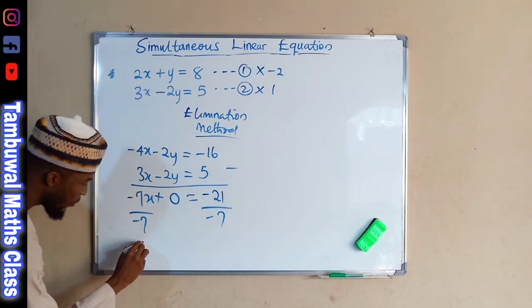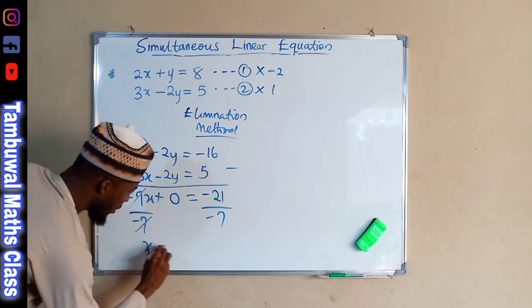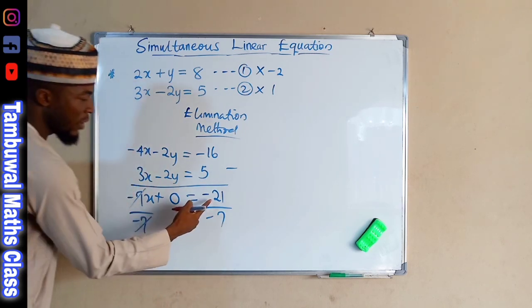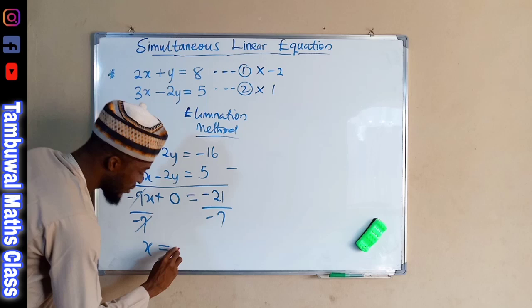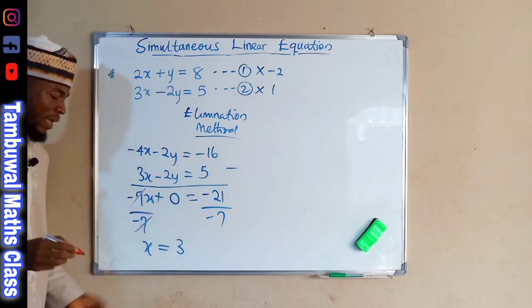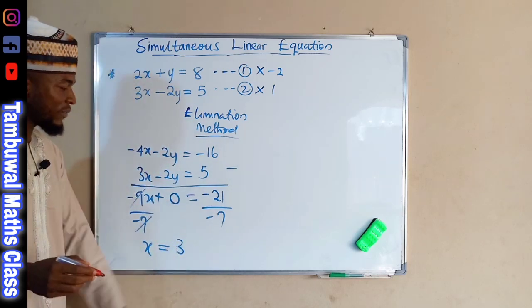Hence, we have X here, because this cancels this, which is equal to this divided by, this is positive 3. Hence, the real value of X is positive 3.